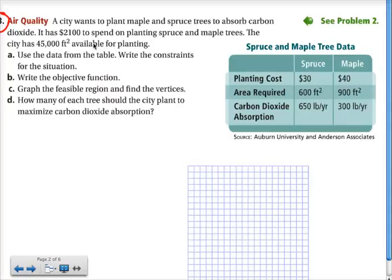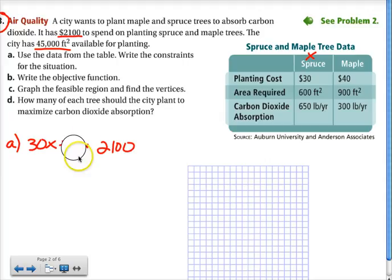This one says the city wants to plant maple and spruce trees to absorb carbon dioxide. It has $2,100 to spend on planting spruce and maple trees. They have 45,000 square feet available for planting. Part A says use the data from the table to write the constraints for the situation. While I was going through it, I'm writing down, here's my totals. So they've got a total of $2,100 to spend, and that's money. So I go to my chart and I look for the money. The spruce are $30, so I'll make the spruce my x, and the maples are $40. And then I have this $2,100 cutoff. And that means I could spend exactly $2,100, or I could spend less than $2,100. So there's my first constraint: 30x + 40y ≤ 2100.